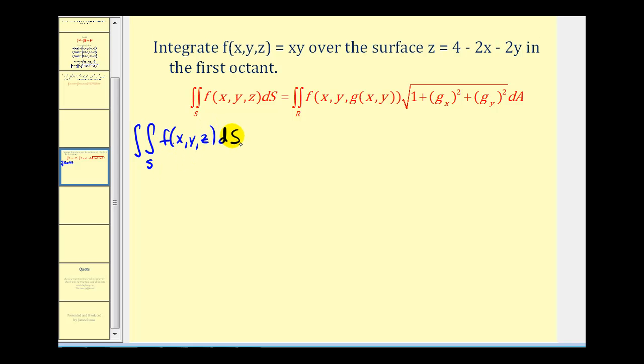We can rewrite this double integral over the surface S as a double integral over the region R in the x, y plane where our function becomes f(x, y, g(x, y)) where g(x, y) equals z. So we have 4 - 2x - 2y.